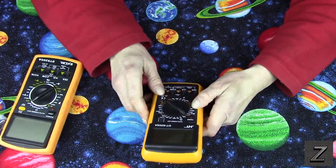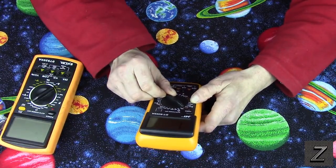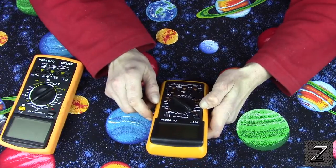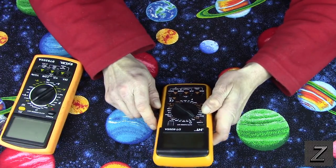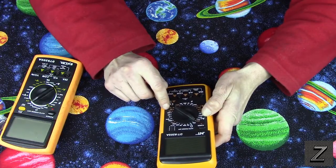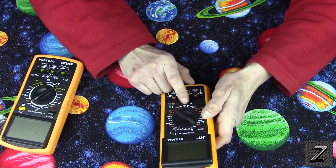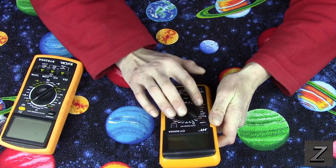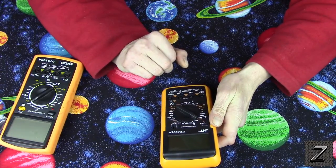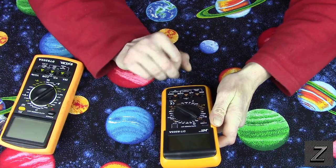So, this will test continuity. It'll test resistance. It's got a transistor tester on it. It has AC and DC voltages. You can test capacitors. That's real handy. I actually use that quite a bit. Then you can test your amps, AC and DC. That's handy to have too.